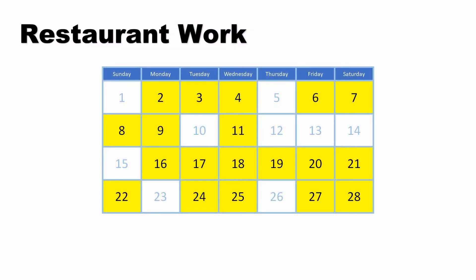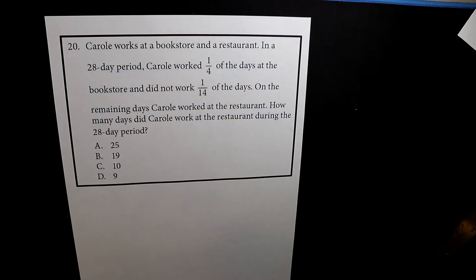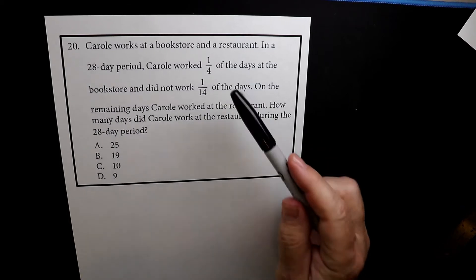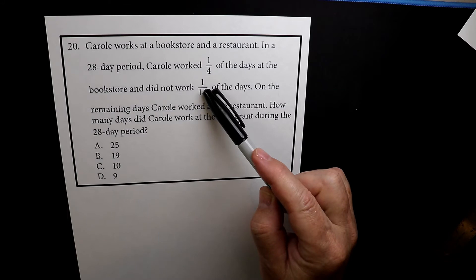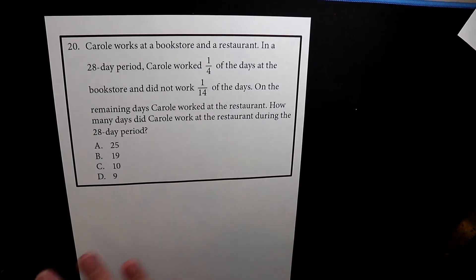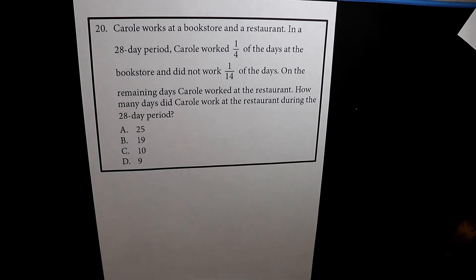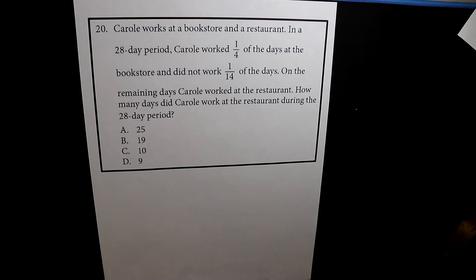If you had this graphic during the test, you could just count the boxes, but you don't have that, so you have to figure out what they are. So let's do these things where we're going to add these two fractions together and then subtract them from the 28 days. So here's how we set this up.